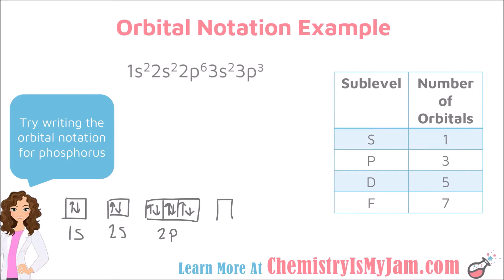The 3s is an s sublevel, so it only gets one box. It gets two electrons, and now it's full. I'm now ready to go to 3p, which should have three orbitals. Here is where Hund's Rule could easily be violated. I need to have three electrons in that 3p sublevel. I'm going to draw all my up arrows first: up, up, up — and I'm done.